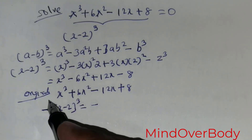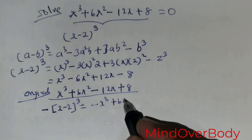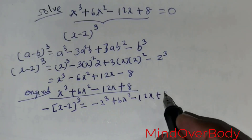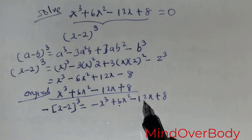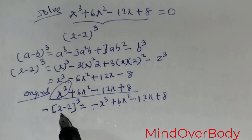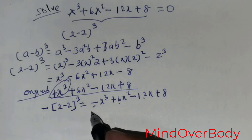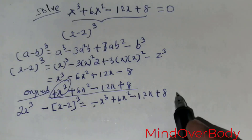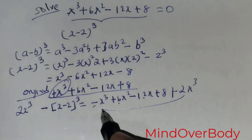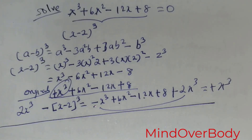Using negative of x minus 2 cubed gives negative x cubed plus 6x squared minus 12x plus 8. But we need a positive x cubed term. To fix this, we add 2x cubed: 2x cubed plus negative x cubed gives positive x cubed. This is how we use algebraic techniques to match the original expression.